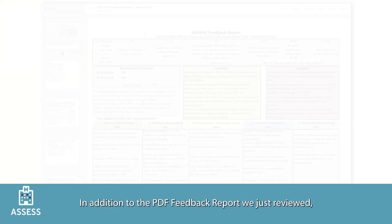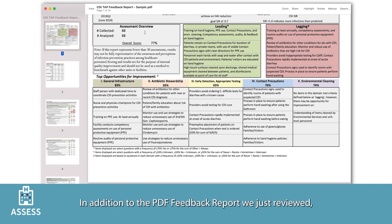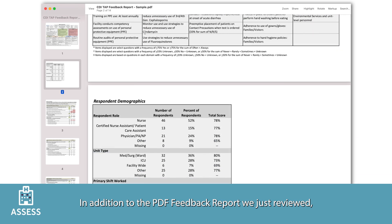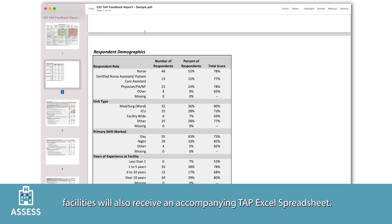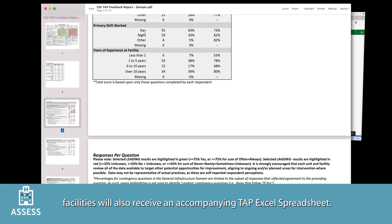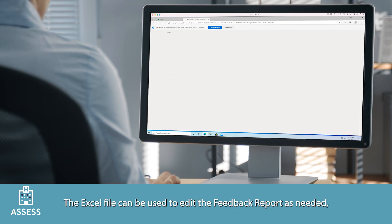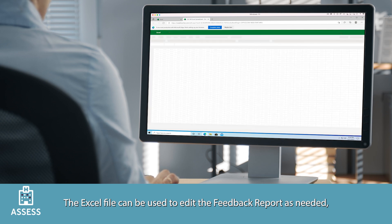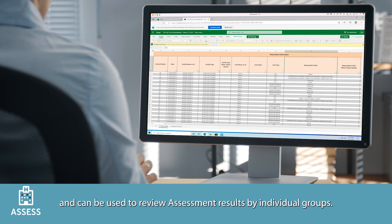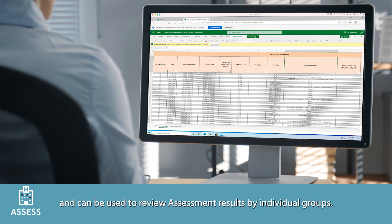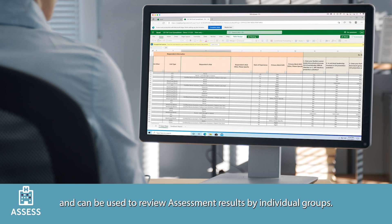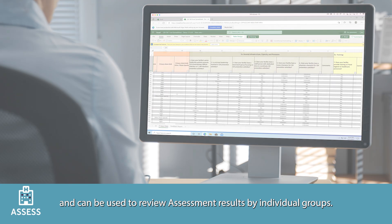One comment in this example notes that bleach wipes are not always available on the carts outside rooms on contact precautions. While this is just one respondent's observation, it may be helpful for the facility to take a deeper dive and review the availability and placement of bleach wipes to identify if improvements are needed. In addition to the PDF feedback report, facilities will also receive an accompanying TAP Excel spreadsheet, which can be used to edit the feedback report and review assessment results by individual groups.